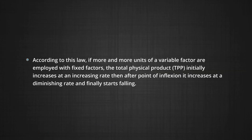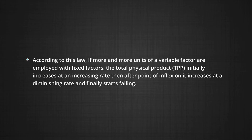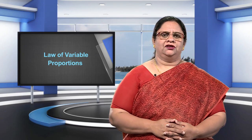According to this law, if more and more units of a variable factor are employed with fixed factors, the total physical product (TPP) initially increases at an increasing rate, and then after the point of inflection, it increases at a diminishing rate. Eventually, it starts falling. With reference to the marginal physical product, the law states that if the amounts of a variable factor are increased, keeping the amount of other factors fixed, the marginal physical product first increases, then falls, and then eventually becomes negative. Since the proportion in which variable and fixed factors are combined changes, this law is called the law of variable proportions.